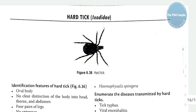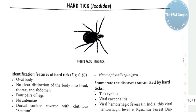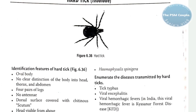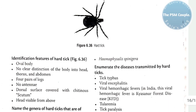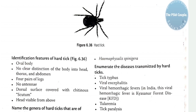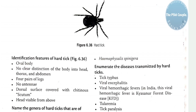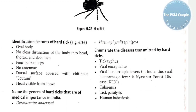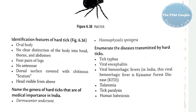Next spot: the hard tick. Identification features: oval body, no clear distinction of the body into head, thorax, and abdomen; four pairs of legs; no antennae; dorsal surface covered with a chitinous scutum; head visible from above. Unlike the flea and louse, the tick's body is not divided into head, thorax, and abdomen.